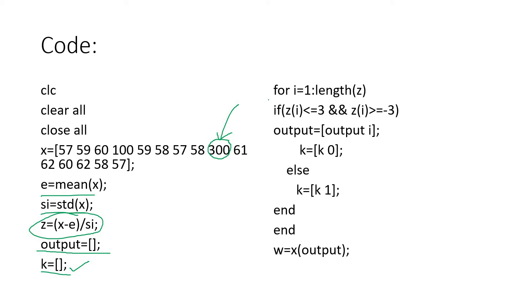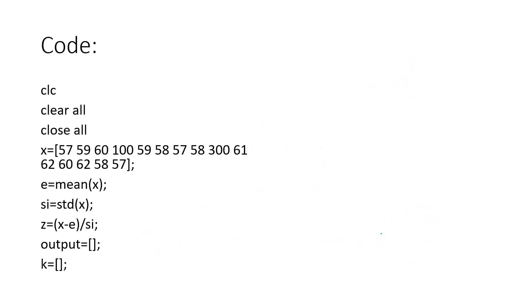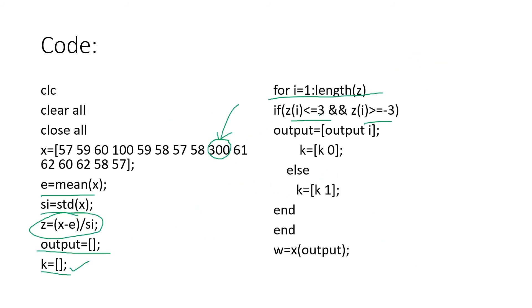Here we are storing logical zero or one. If that is an outlier then one will be stored, if it is not an outlier zero will be stored. Then we are traversing in our data: for i = 1:length(z), where z is the z-score of our data x. If z(i) is less than or equal to 3 AND z(i) is greater than or equal to -3 - because see, both sides, this left-hand side and right-hand side, both should be satisfied - then that is not an outlier.